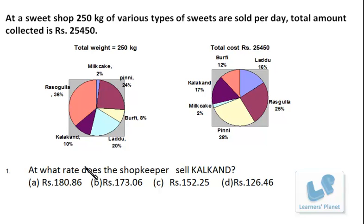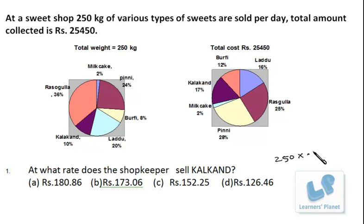The first question is: at what rate does the shopkeeper sell kalakand? We need to find the selling price per kilogram of kalakand. The total weight is 250 kg, and kalakand contributes 10%, so quantity = 250 × 0.10 = 25 kg. The total cost from kalakand is 17% of Rs. 25,450, so cost = 25,450 × 0.17.